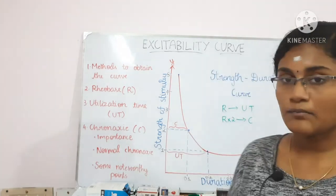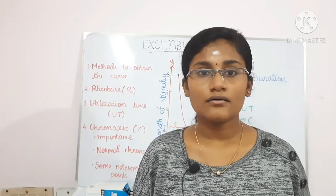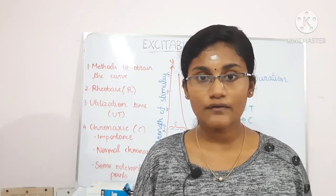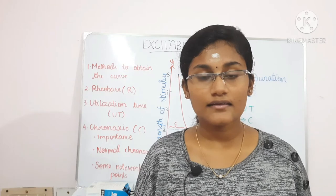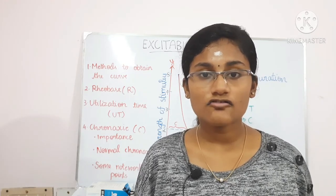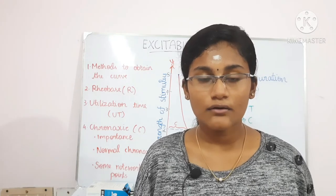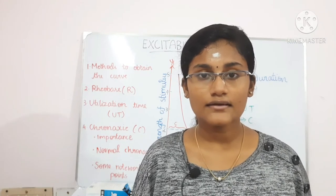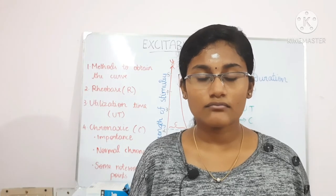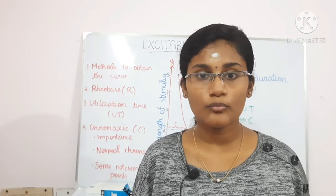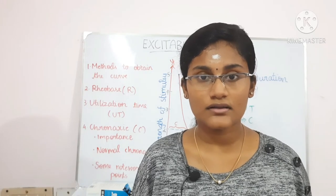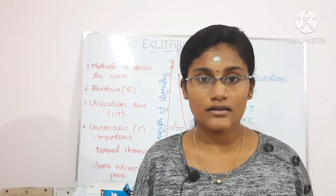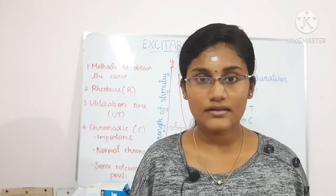Some noteworthy points of chronaxi: the chronaxi of infants is 10 times more than that of adults, meaning the excitability of infants is less than adults. The chronaxi is shorter in warm-blooded (homeothermic) animals than in cold-blooded (poikilothermic) animals, meaning excitability is greater in warm-blooded animals. Also, chronaxi is shorter in pale muscles than in red muscles, meaning excitability is greater in the pale muscles.